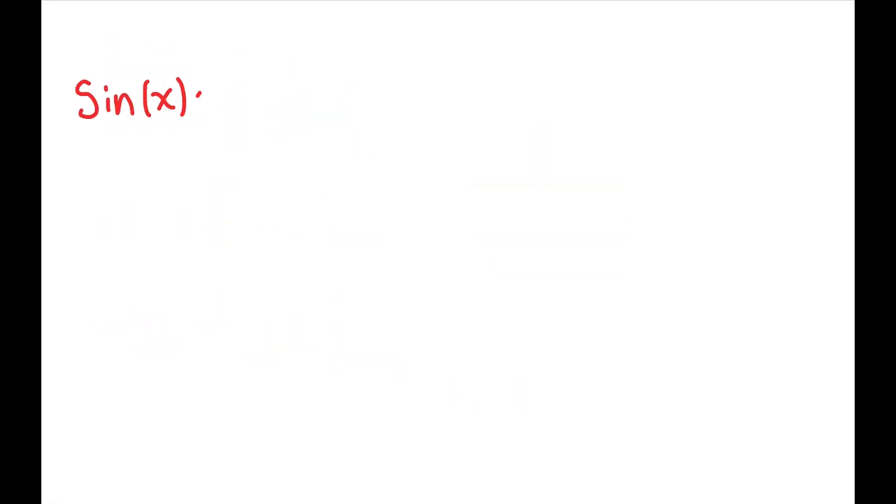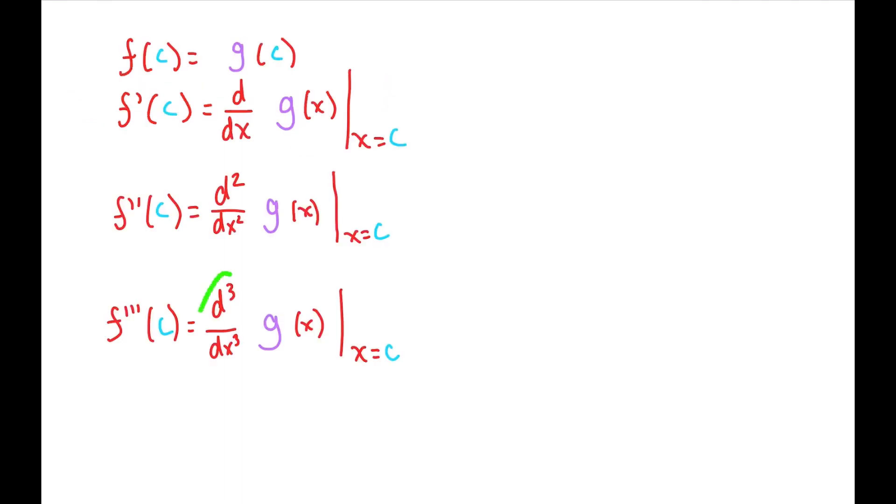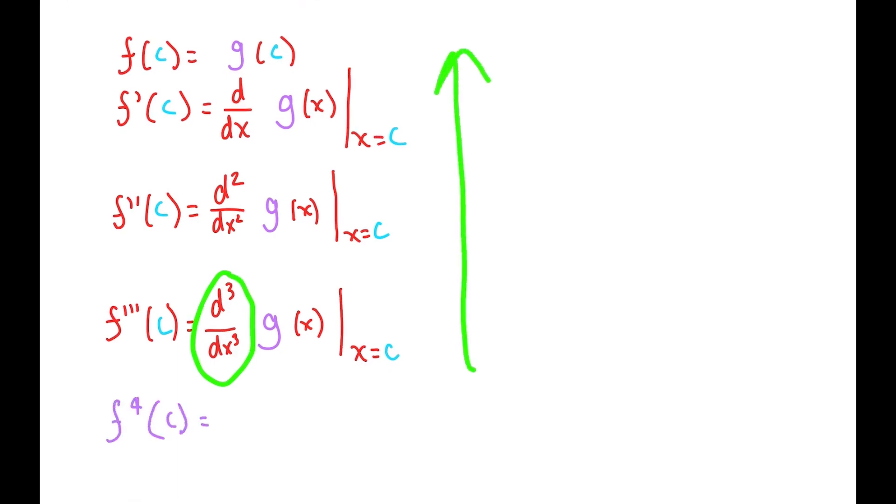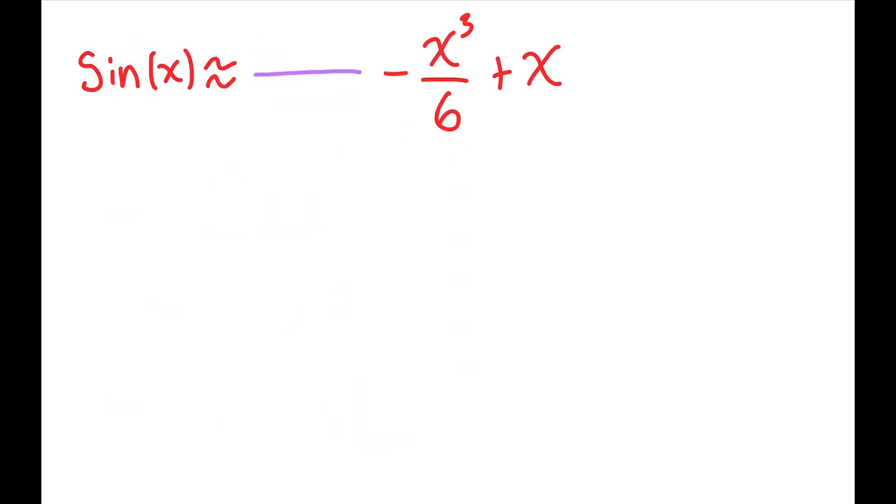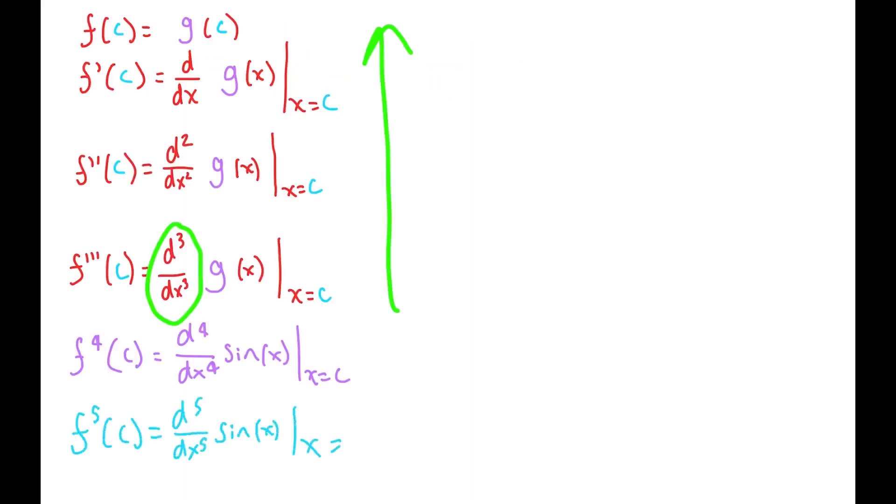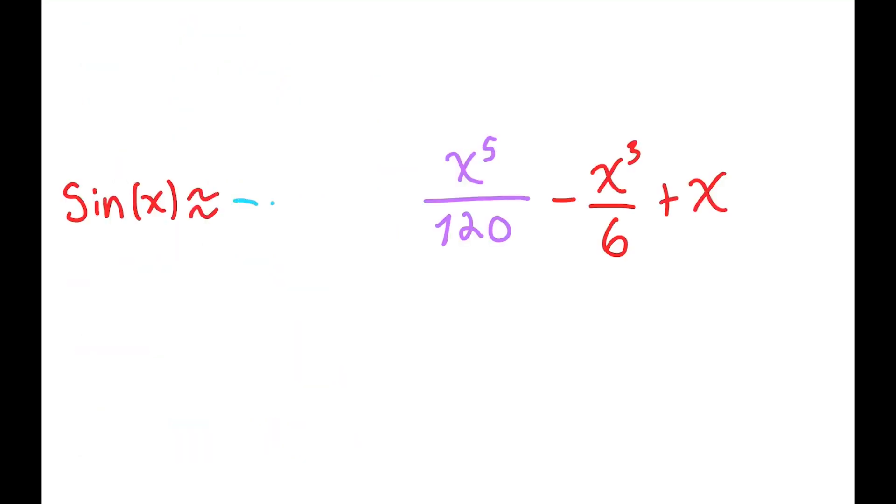Let's go back to our equation for the sine approximator. We said that it was negative x cubed over 6 plus x. That's because we used the third derivative when setting up our approximator function. If we set the fourth derivatives equal and did the stair stepping, then we would get x to the fifth over 120 minus x to the third over 6 plus x. If we started with the fifth derivative, we would have negative x to the seventh power over 5040 plus x to the fifth power over 120 minus x to the third power over 6 plus x.